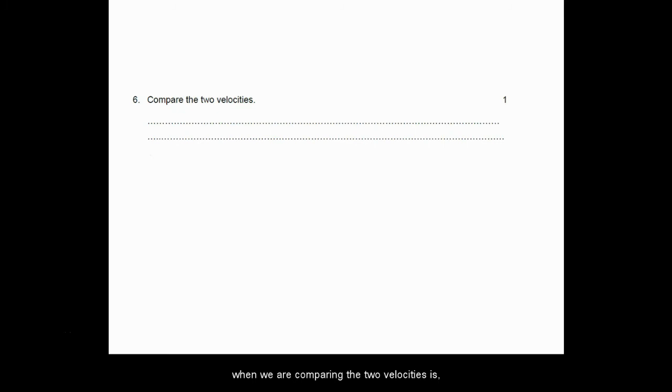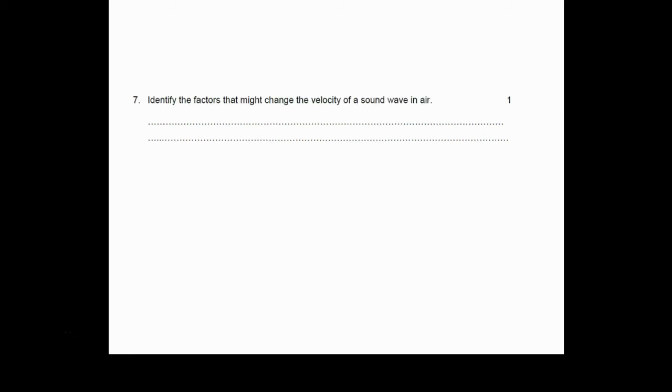The first thing that we can say when we are comparing the two velocities is: are they the same or are they different? Are they higher or are they lower? Now, if they are higher or lower, does that result occur within the range of uncertainty that we worked out for our experiment? You can think through this yourself and answer that question in this space. The next thing to do is to identify the factors that might change the velocity of sound in air.